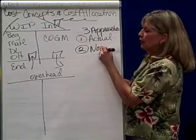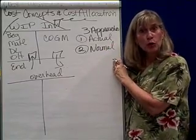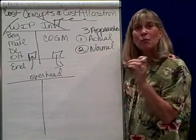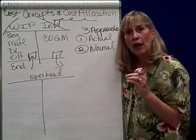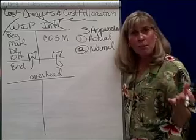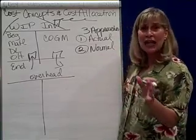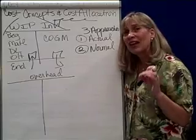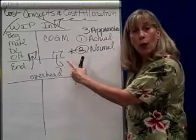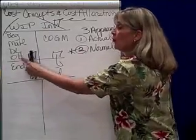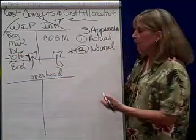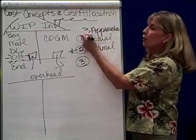The second way is what we're going to be doing primarily in this class, and it's called normal costing. Normal costing says I'm going to use actual materials and actual labor, but I'm going to use an estimate for overhead. I know pretty much what overhead is going to be because I've been in business before, but I don't know precisely. So when you look at your work in process account, this overhead number is going to be an estimate.